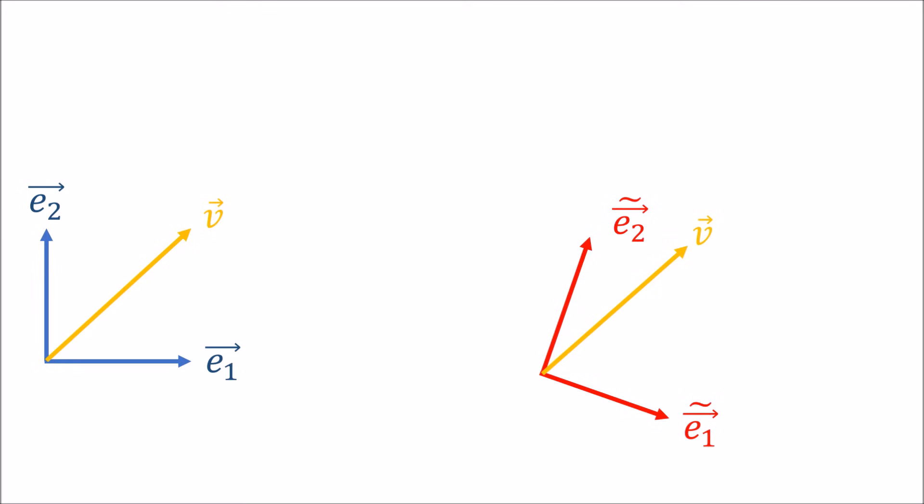All right, so here's another example. Again, we have the old basis E1 and E2 and the vector V. And just notice that V is made up of about equal parts E1 and E2. So the angle V makes with E1 is about the same as the angle that V makes with E2, and this means that the components in each direction are about the same.